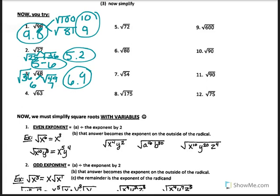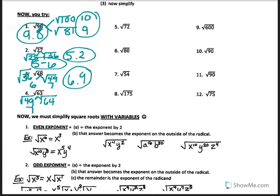The square root of 63 — what two perfect square roots is that between? The square root of 64 is 8 and the square root of 81 is 9. So 63 is between 49 and 64, and it's going to be closer to 64, like 7.8.